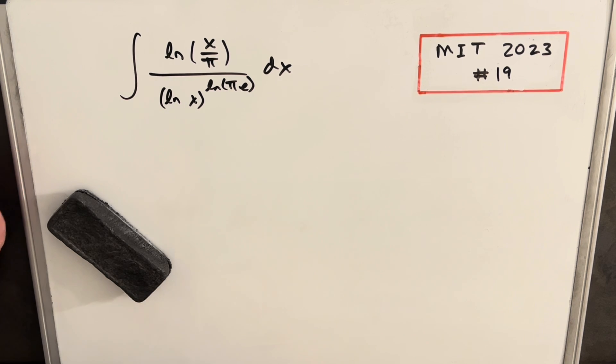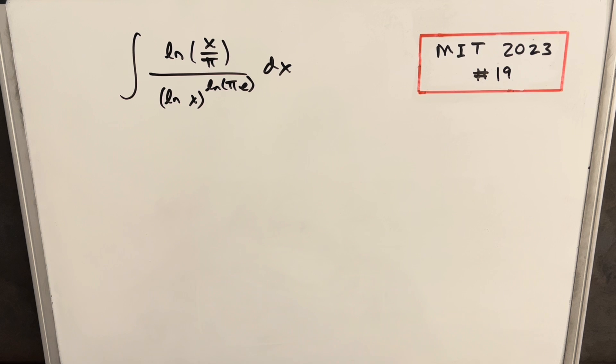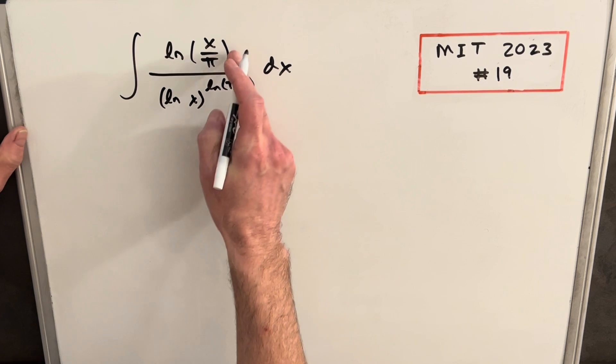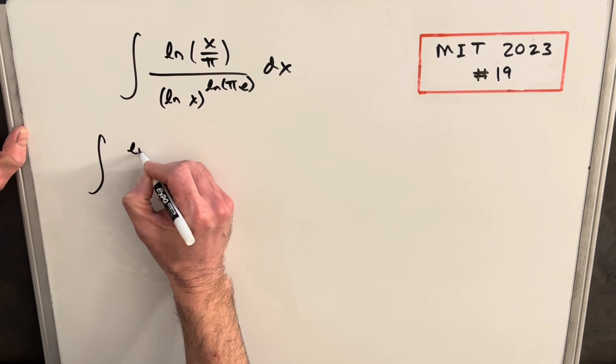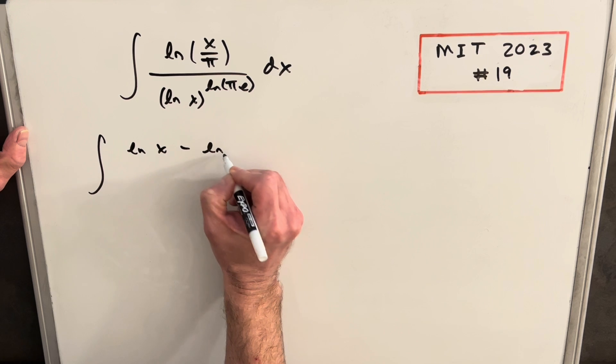That's an e right there if you can't see it. I think it's a case where we just kind of need to go one step at a time and try to break this apart. So what I'm going to do is use some log properties. In the numerator, I can rewrite this because we're dividing, we can write this as ln x minus ln π.